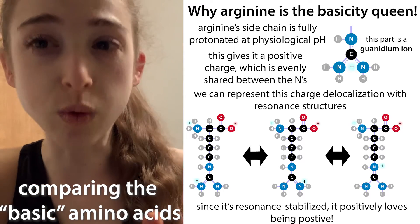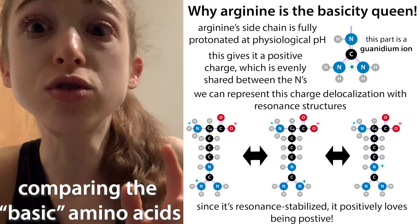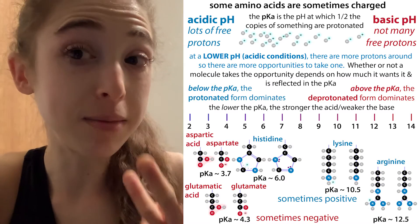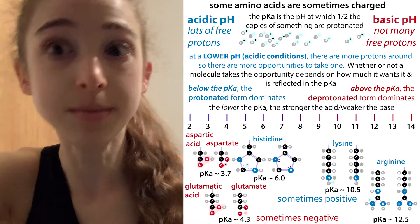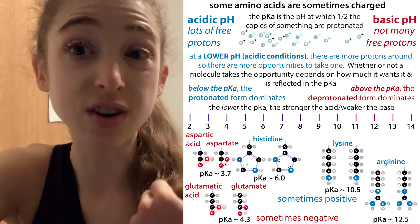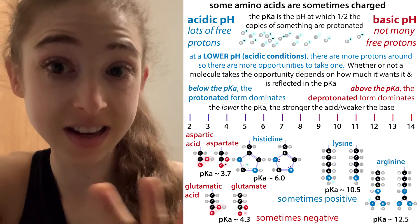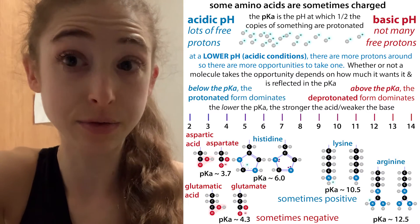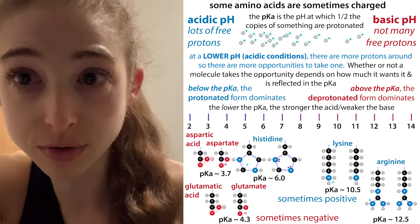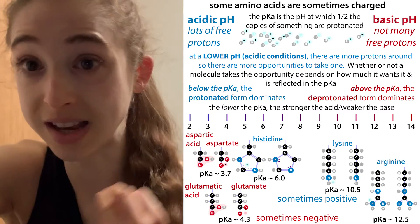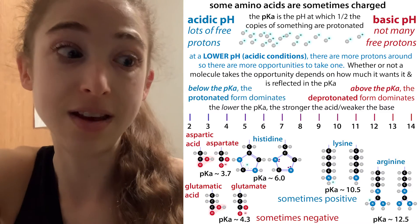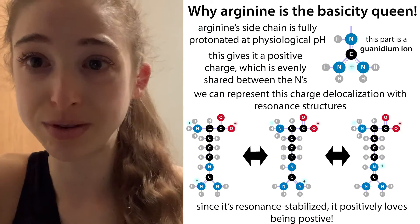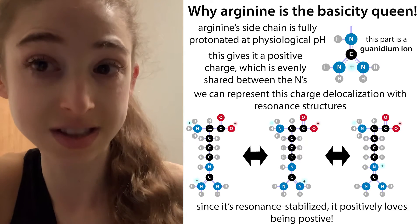Arginine is the basicity queen. You're almost always going to find it to be positively charged. There are three amino acids that you can find sometimes to be positively charged: arginine, histidine, and lysine. And of these three, arginine is the most basic. The basic refers to the fact that in its neutral form, it's able to act as a base and steal a proton. You're almost always going to find that it's already acted as a base, already stolen a proton, and now is in its positively charged state.